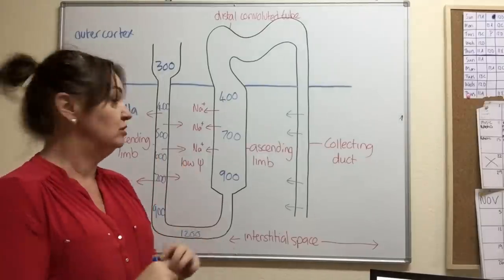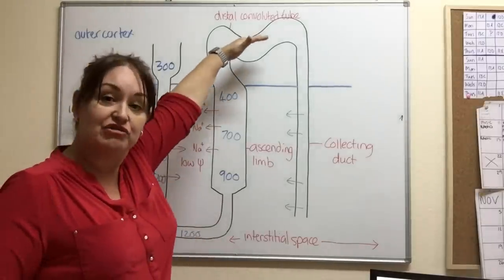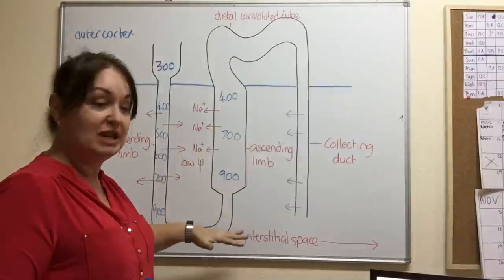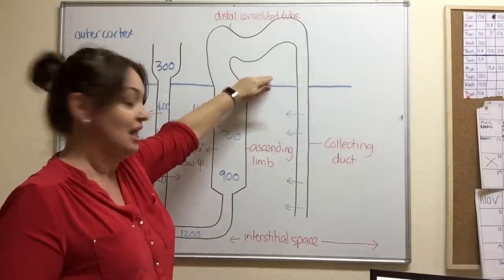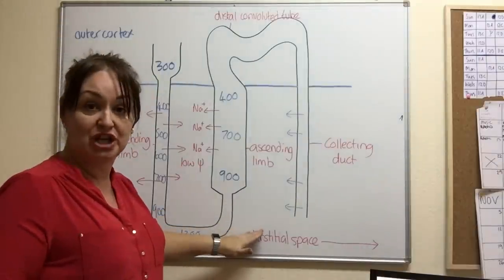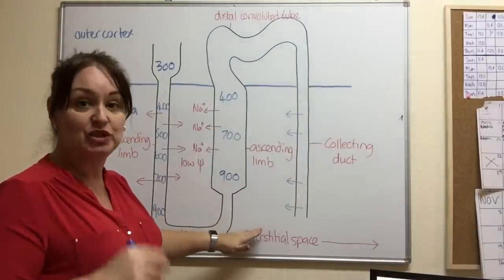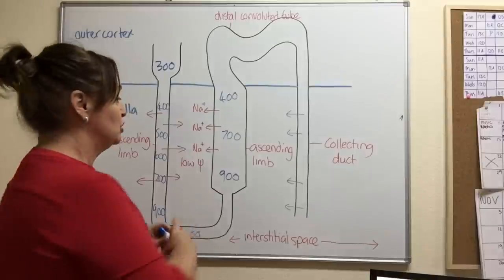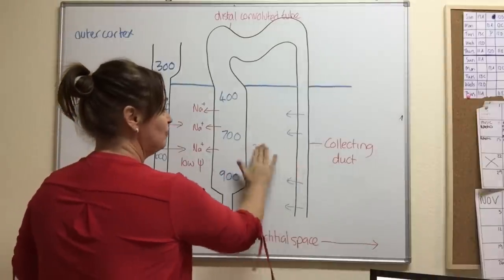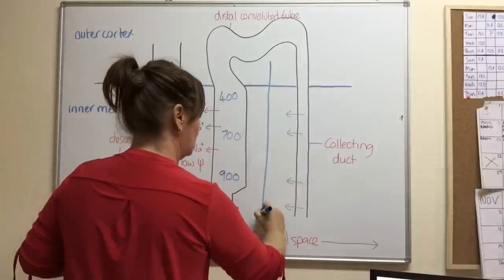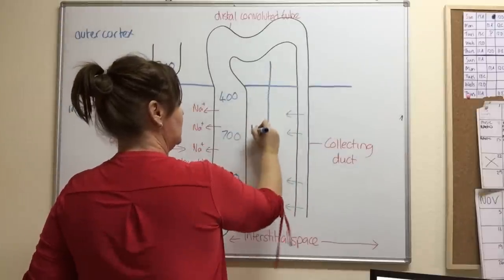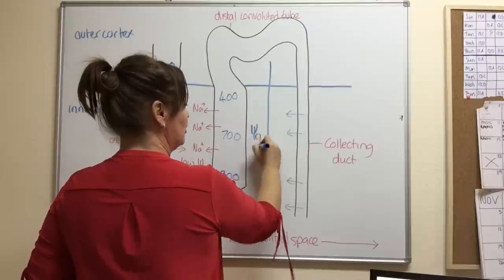So it follows that we're going to have a gradient for water potential with the highest water potential here, in other words, the most water, and the lowest water potential here, i.e. the least water and the more solute. So I'm just going to remove this off my diagram, and we'll label our water potential gradient.